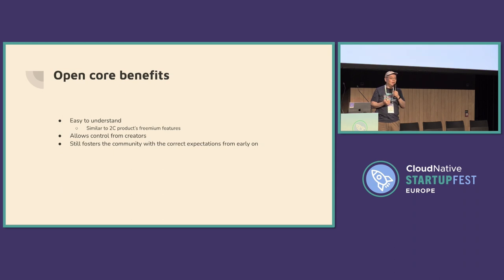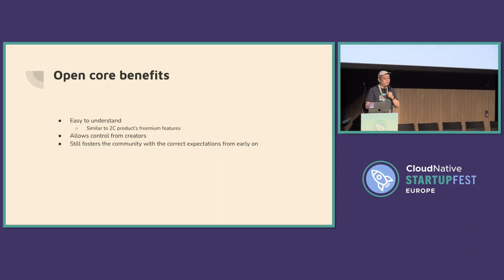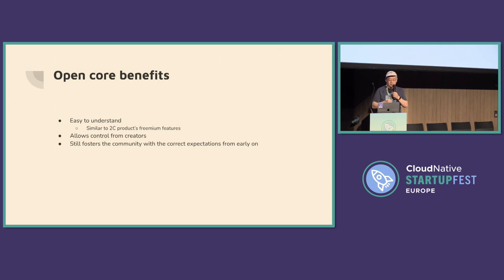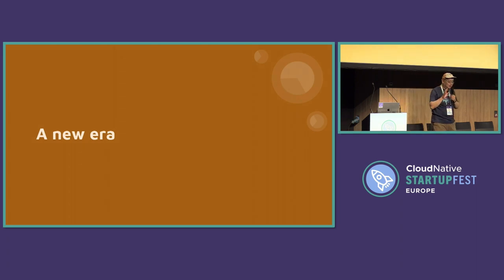A clear benefit of open core is that it sets expectations right from the start. It says: 'I wrote this software, I want to make money from it, but I also want a community.' It's not a bait-and-switch — develop a community, let the product and community feed each other, and then change the license later. Instead: 'I always intended to make money from this, so I kept something that large enterprises would need — like monitoring, high availability, cluster management — as closed source, while the basic functionality for individual developers stays open.'